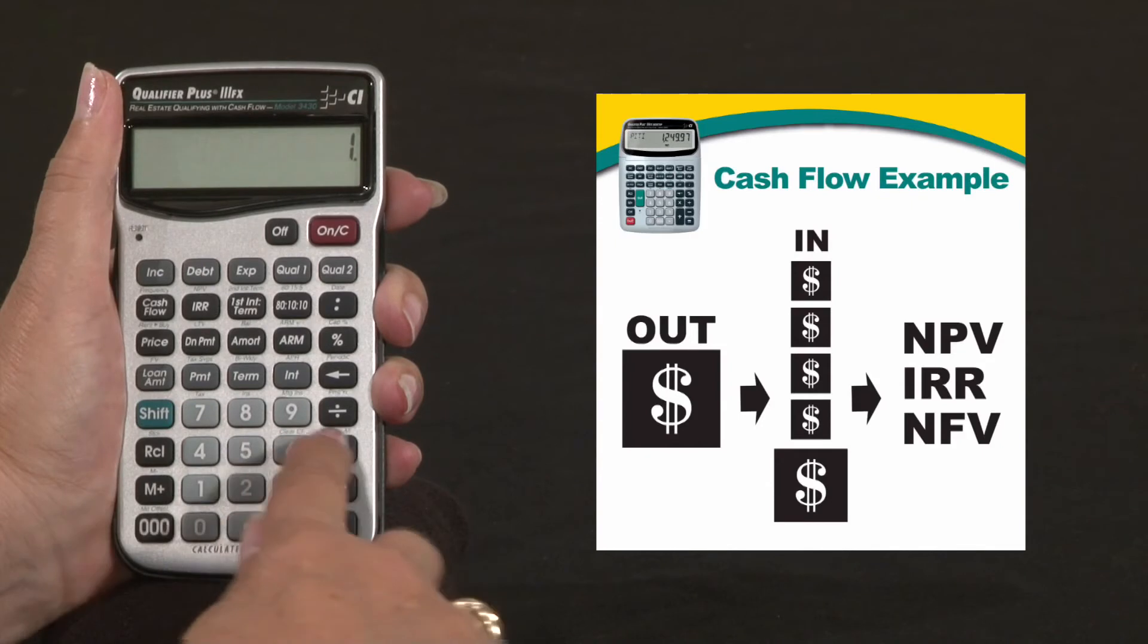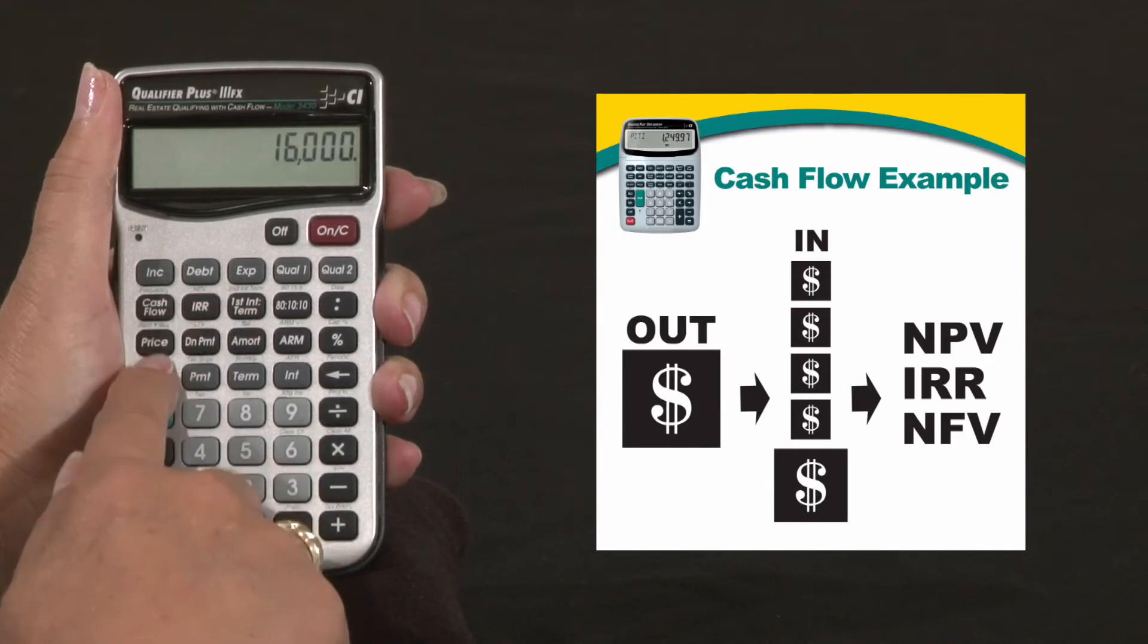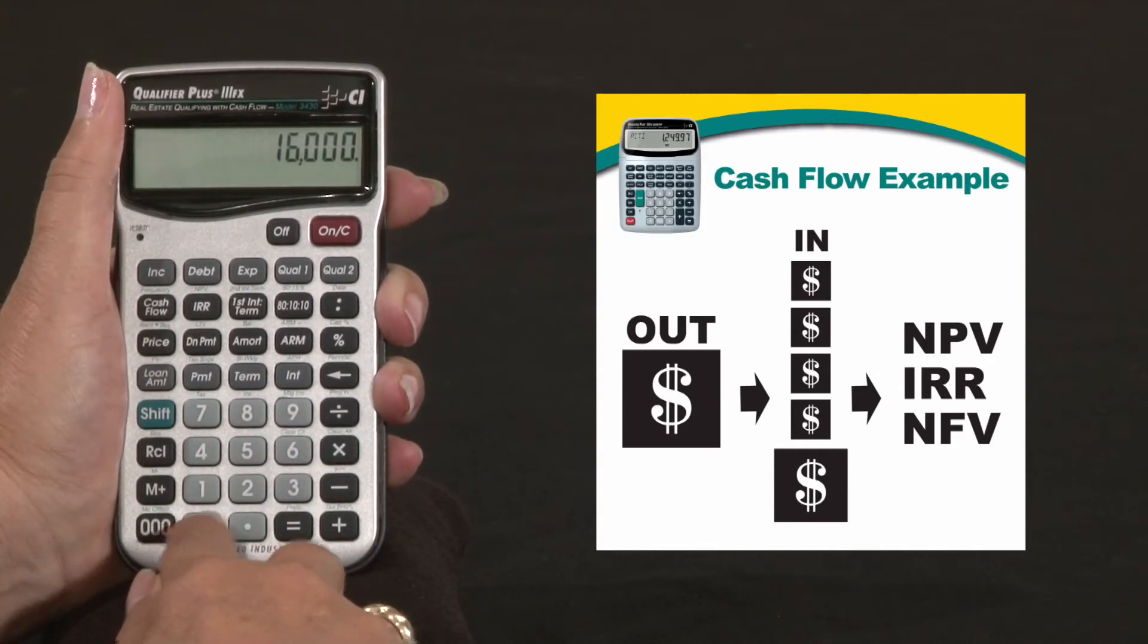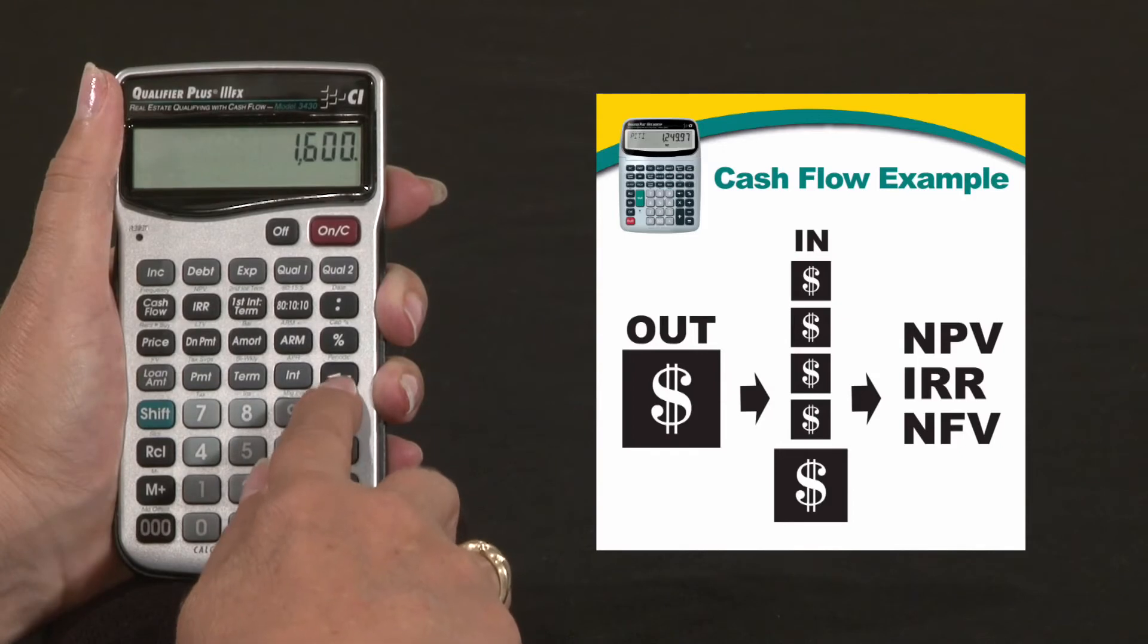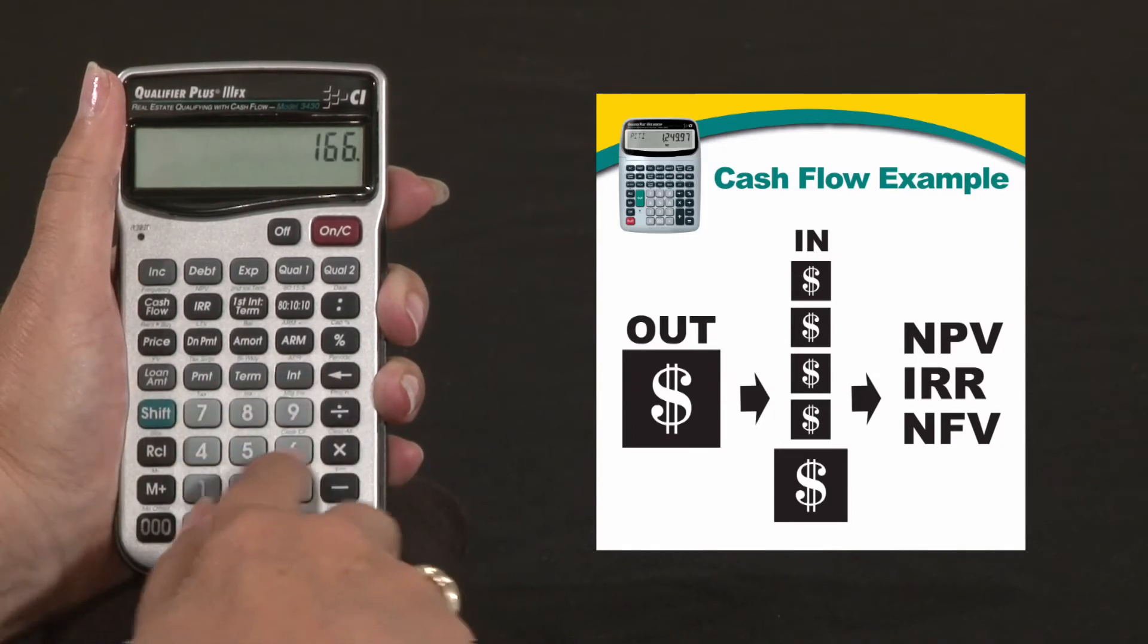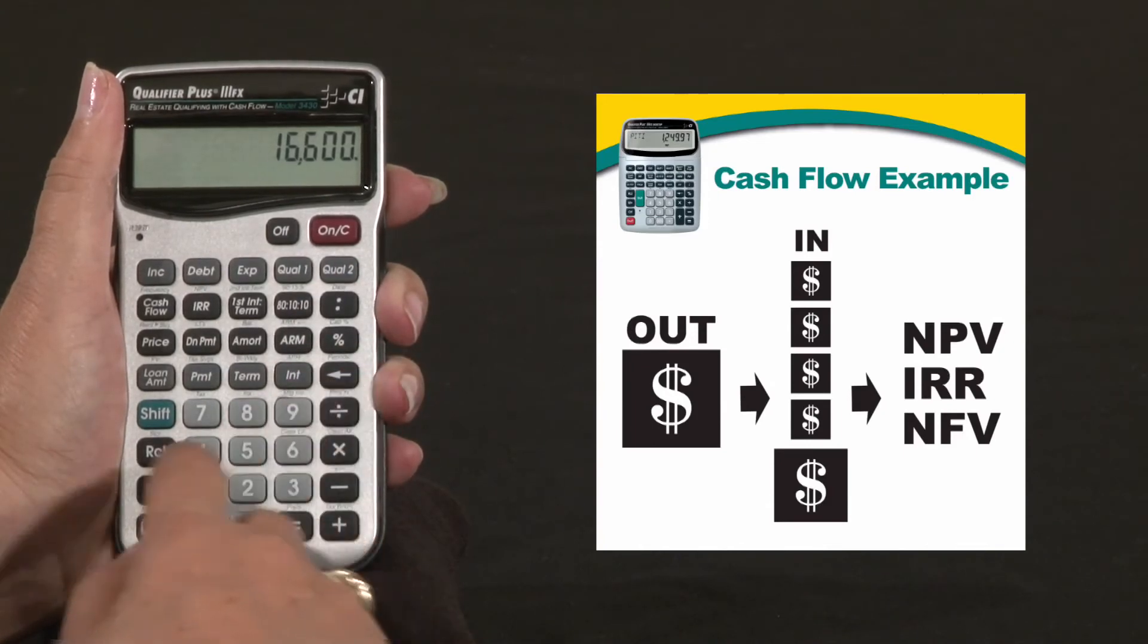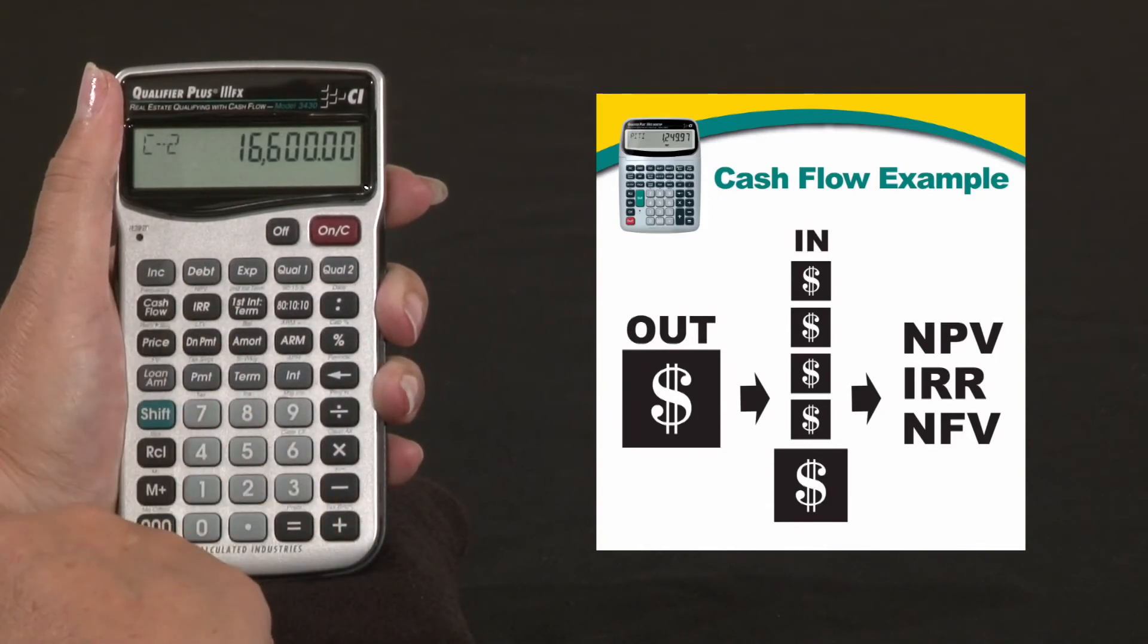Now his first yearly income is $16,000. His second year he's going to get $16,000. And see I missed a six so we're going to back it up. $600,000. Another great feature, you don't have to erase it, you can just back up and put in a new number and that'll be the second outlay.